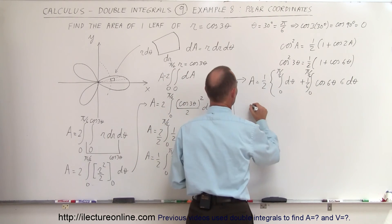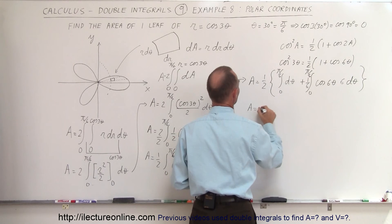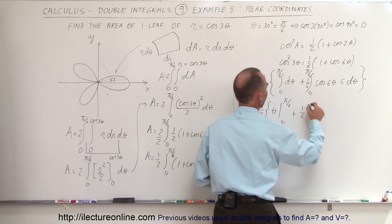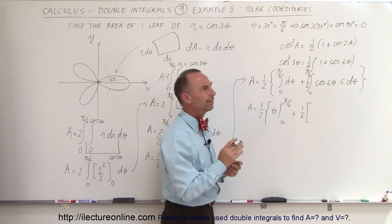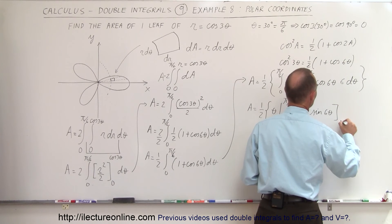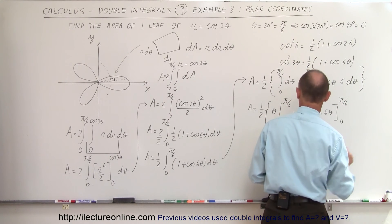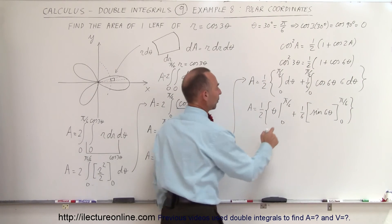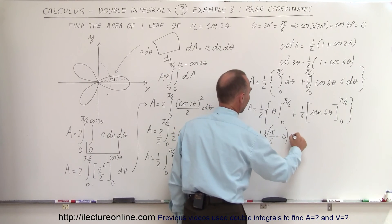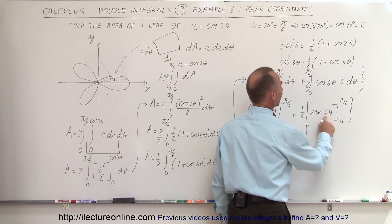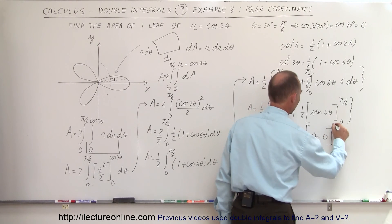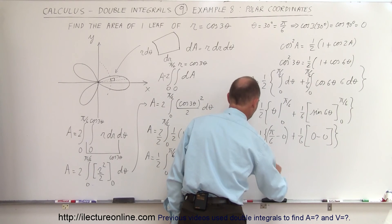Integrating, the area equals one half times: theta evaluated from 0 to pi over 6, plus one sixth times sine of 6 theta evaluated from 0 to pi over 6. Plugging in the upper limit on the first term gives pi over 6 minus 0. For the second term, sine of 6 times pi over 6 equals sine of pi, which is 0, and sine of 0 is also 0 — so that term drops out entirely. We're left with the area equals pi divided by 12.